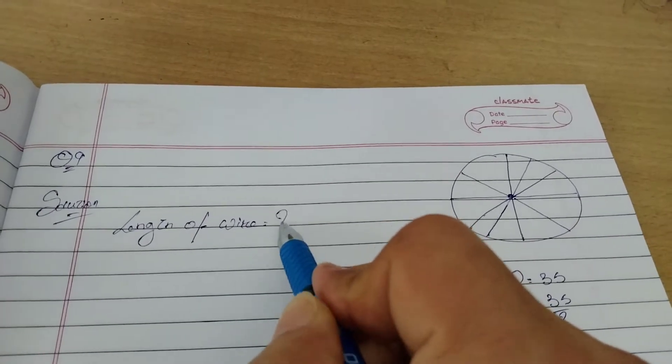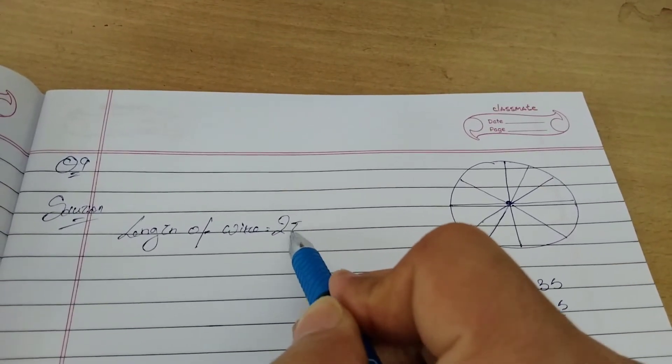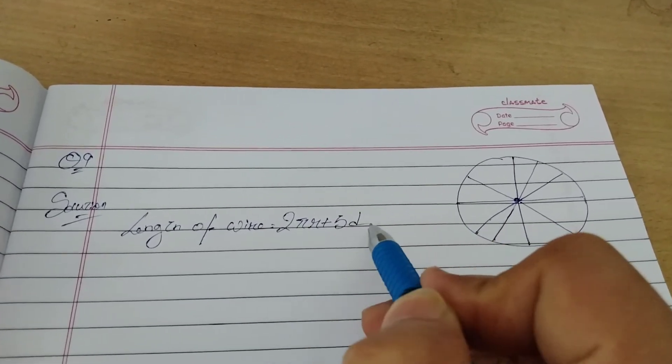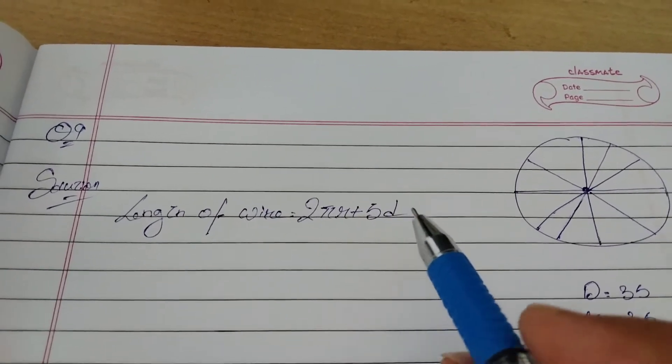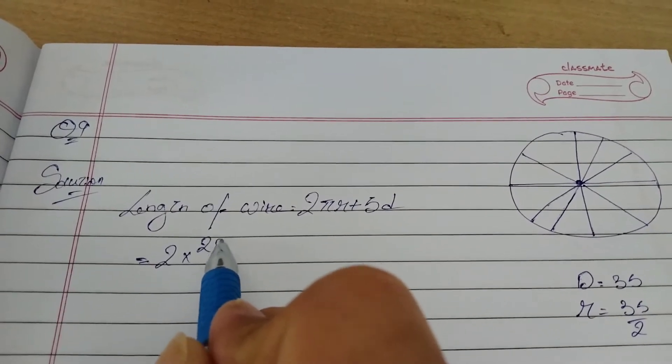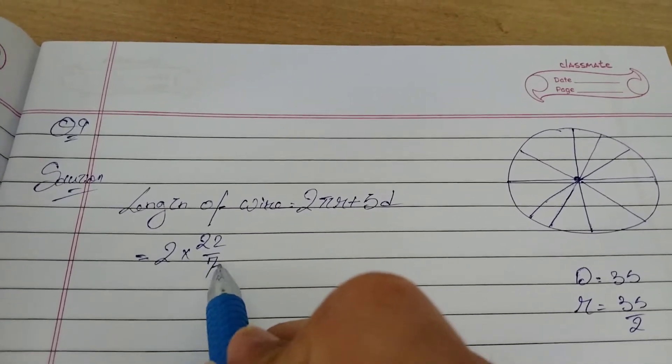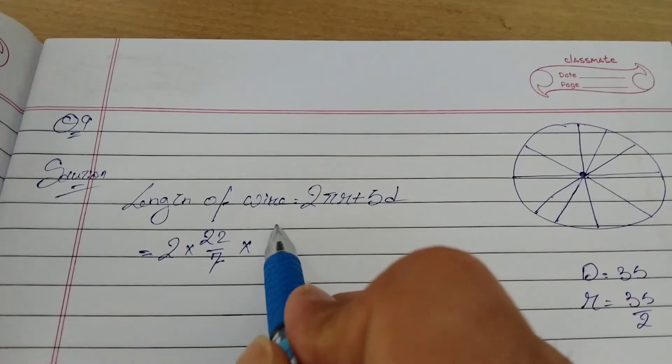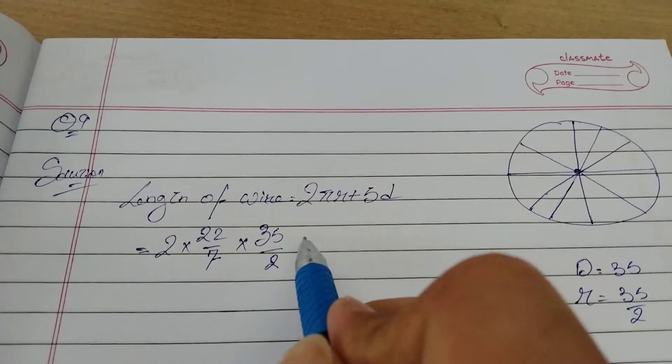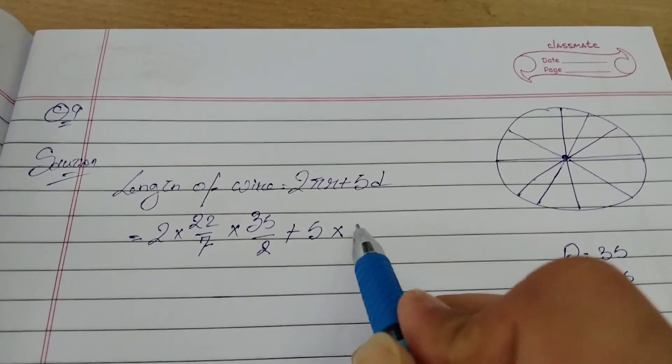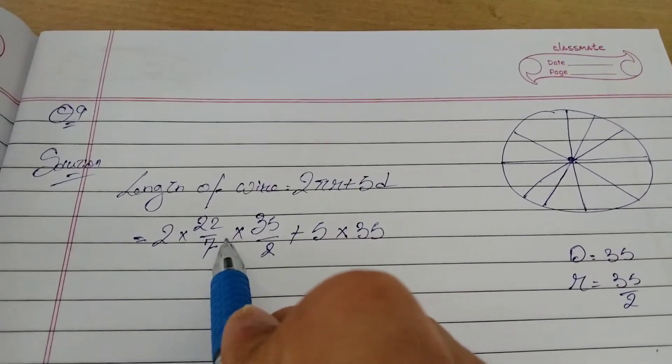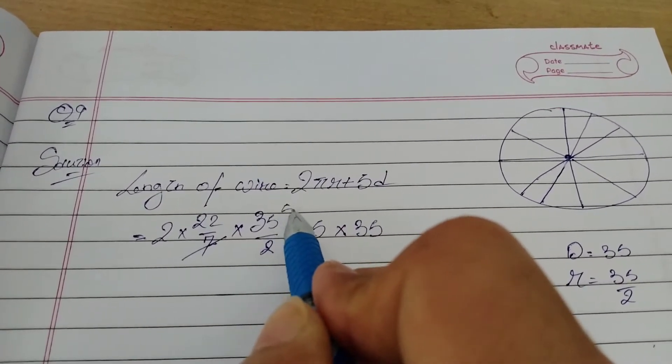Length of wire. The formula for length of wire is 2πr plus 5 diameter. So 2 into π is 22 by 7 into radius 35 by 2, plus 5 into diameter 35. Can we cancel any? 7 divides into 35.